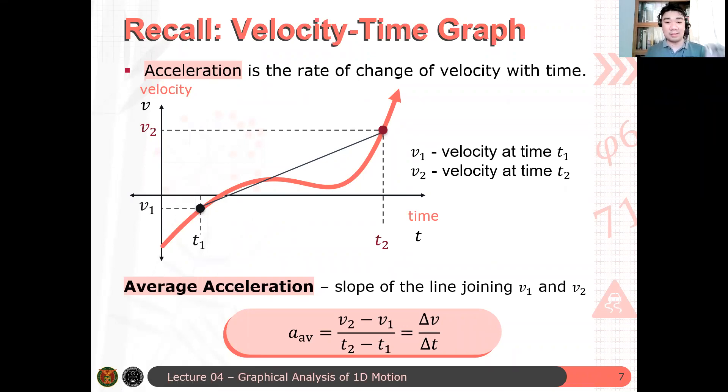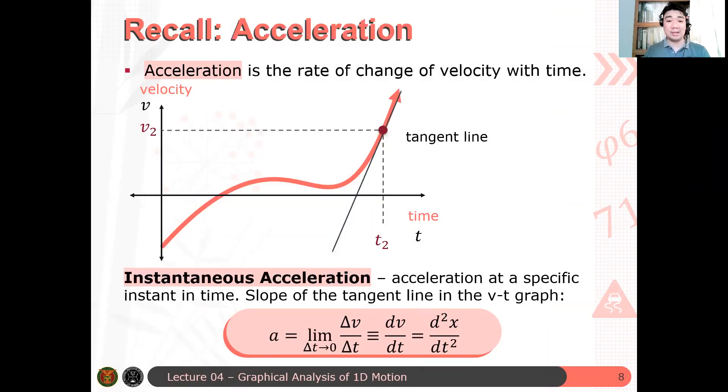We can, from the secant line, we can also determine the tangent line about a point for the velocity time graph. So if we determine the tangent, the slope of the tangent line about a point, about the point on the VT graph, we will get the instantaneous acceleration, which is, again, your time derivative of your velocity, or just the second time derivative of your position.